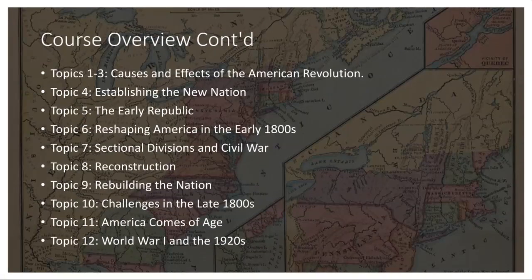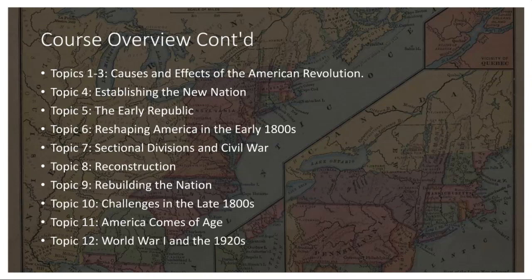Let's dig into some of the topics we will be covering. We begin with the American Revolution — a defining moment in history that stemmed from multiple factors. Colonial discontent with British policies, including taxation without representation, trade restrictions, and the Quartering Act, led to growing resentment. The Stamp Act of 1765 and the Boston Tea Party further fueled tensions. These grievances culminated in the Declaration of Independence in 1776, asserting the colonies' right to self-governance and marking the birth of the United States.